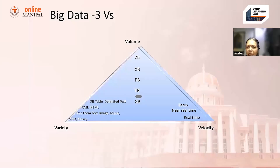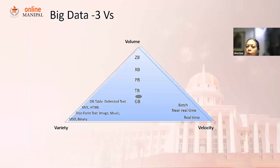When we talk about data and the initial years, big data was across mainly these three axes. You could sort of say: volume, which we talked about from GB, TB — now we're talking about zeta bytes. One zeta byte is a trillion bytes of data.